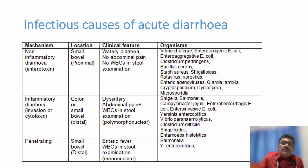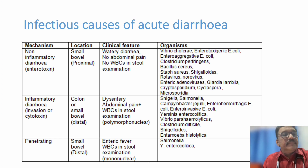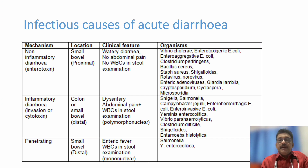Vibrio cholerae causes a special type of diarrhea known as rice-water diarrhea — water continuously pours out, and the patient loses large amounts of water and electrolytes. In contrast, typhoid and Salmonella paratyphi cause only mild diarrhea with high-grade fever, and patients can have splenomegaly and hepatomegaly. So different organisms produce different clinical pictures.